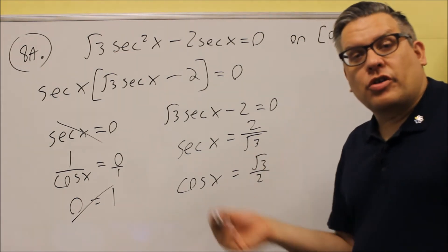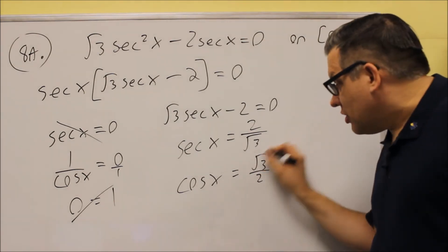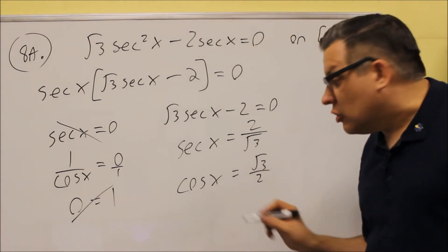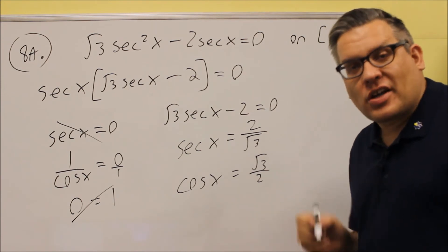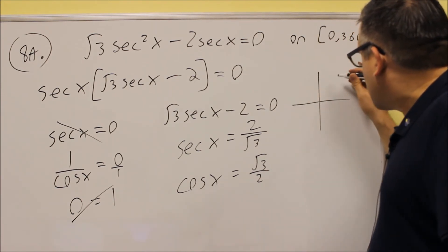Now what you want to do is go on the unit circle and find any place where the x value equals square root of three over two, because cosine always represents an x value on the unit circle.